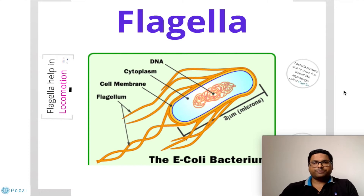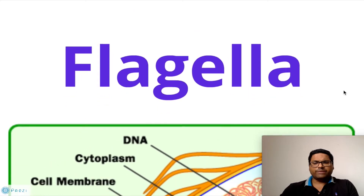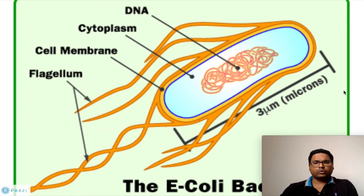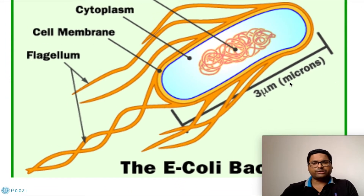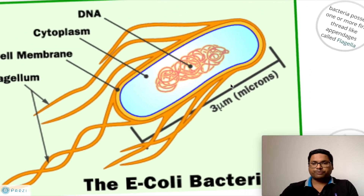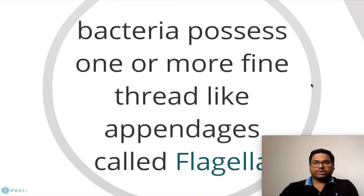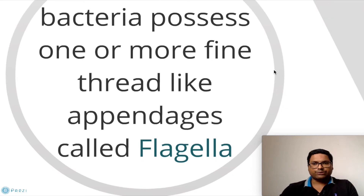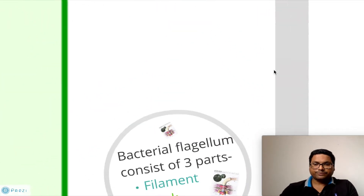Hi everyone, this is Vishal Bhair. We will continue our discussion of prokaryotic cell structure with the structure called flagella. Flagella is a very important structure that helps bacteria move from one place to another. Here we are taking the example of Escherichia coli bacteria, which is present inside the human intestine. The bacteria possesses one or more fine thread-like appendages called flagella.